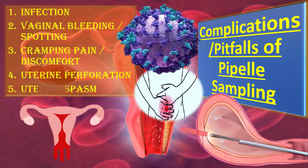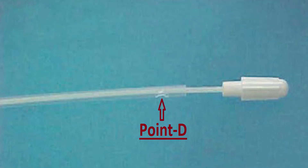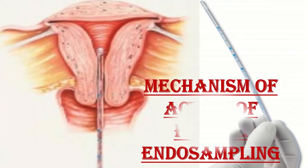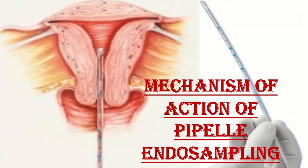Point D is an indentation in the pipel endosampler located one centimeter from its proximal end, preventing the piston from being totally withdrawn from the sheath. The mechanism of action is that rapid movement of the piston within the sheath from its fully inserted position to its maximum retracted position creates negative pressure within the sheath, which drains mucosal tissue through the aperture in the lumen of the sheath.